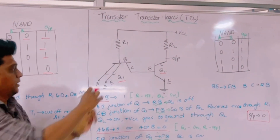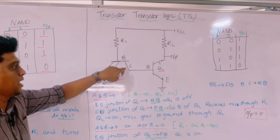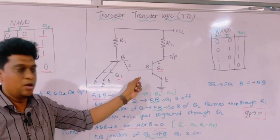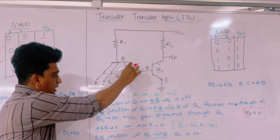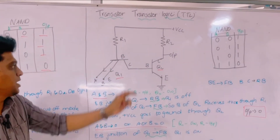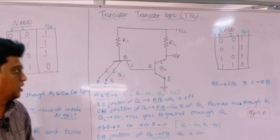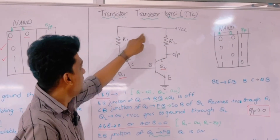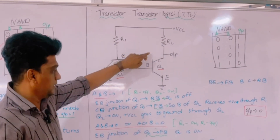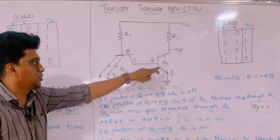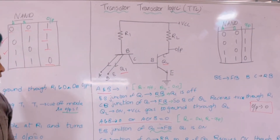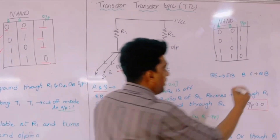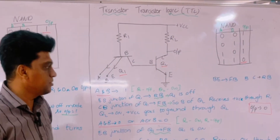With Q1 off, the collector-base junction becomes forward biased, which makes Q2 switch on. When Q2 switches on, it receives VCC through the resistors and allows VCC to pass through Q2 to ground. This turns Q2 on and the output becomes 0.